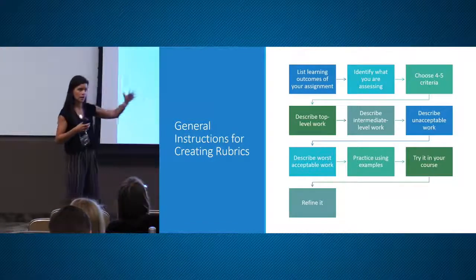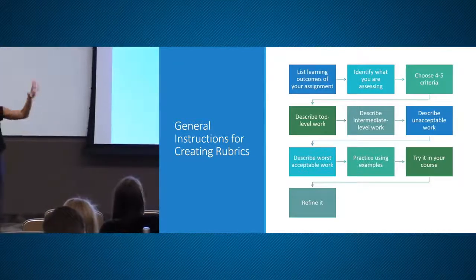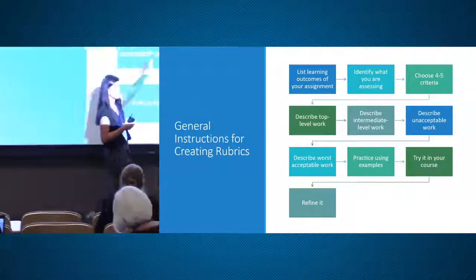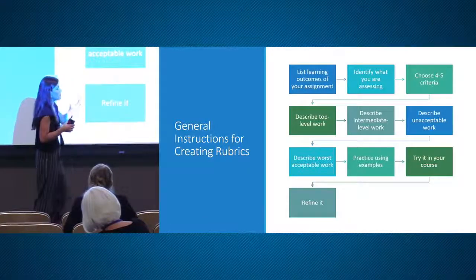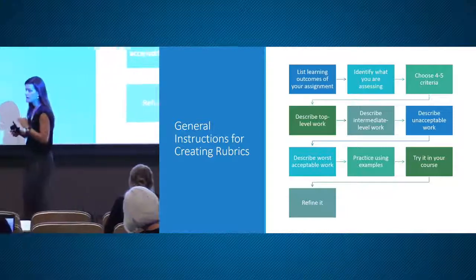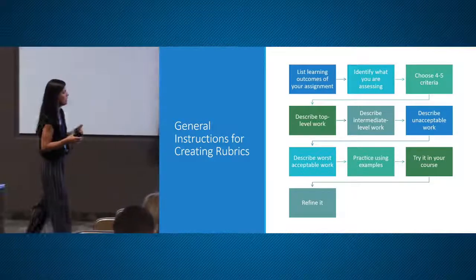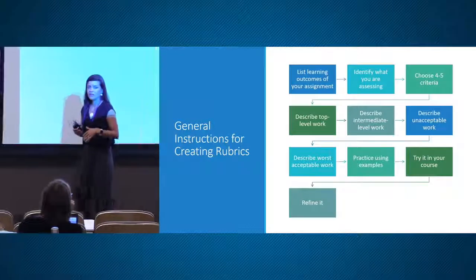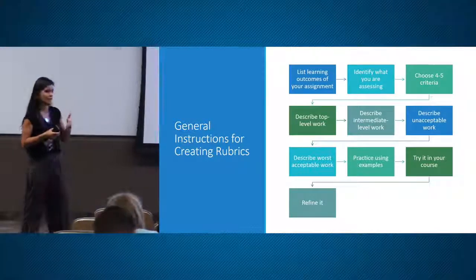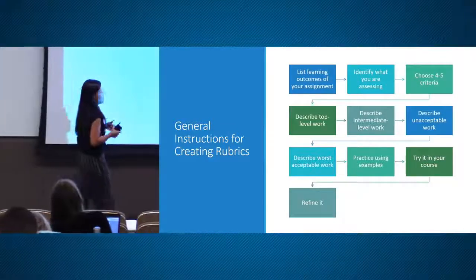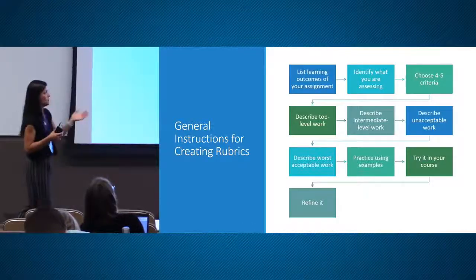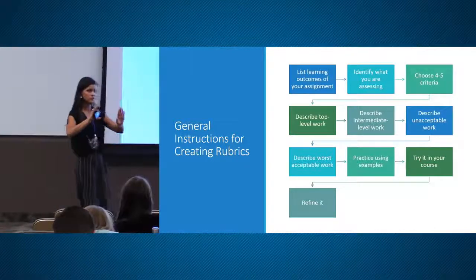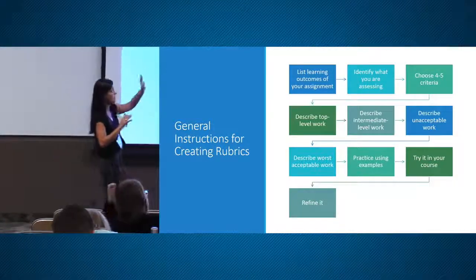A top-level work is going to mention these five things. Then go to intermediate level work — this is excellent, this is good. Then go to unacceptable work, probably a grade of one or zero. Then get your worst acceptable work — it's still acceptable but below the standards you established. Use examples of student work and put them in to see how they compare and whether there's a clear distinction between these four levels.